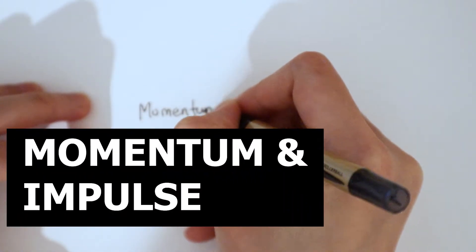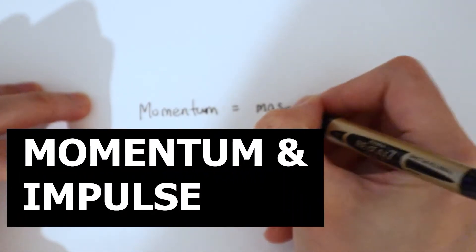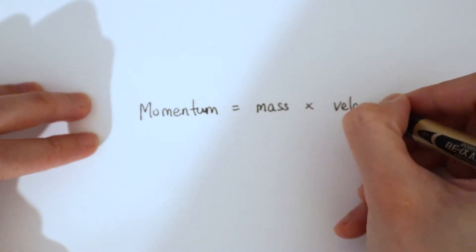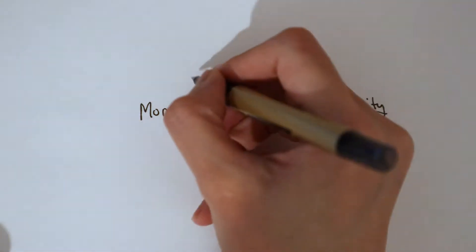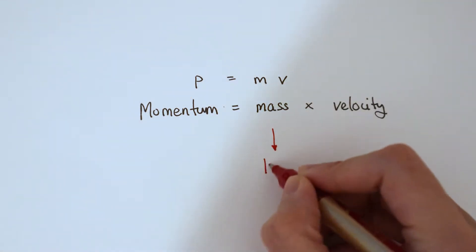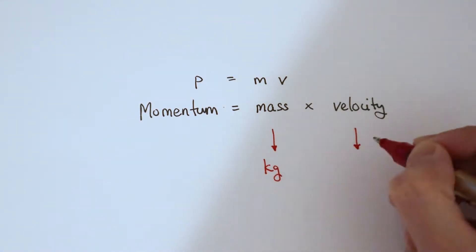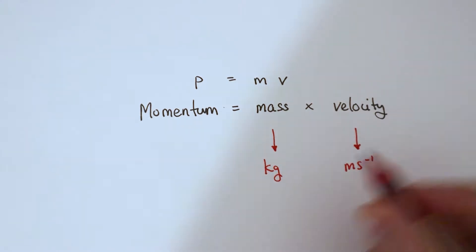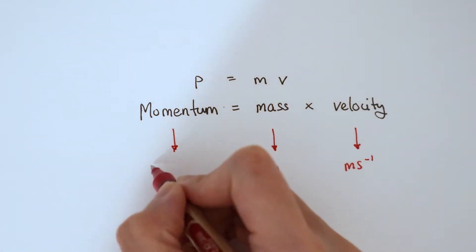Momentum is mass times velocity. That's something you probably know already from GCSE physics. We can write it in symbols: p is mv. And you also know that the units of mass is kilograms, the units of velocity is meters per second, and therefore the units of momentum is kilograms meters per second.